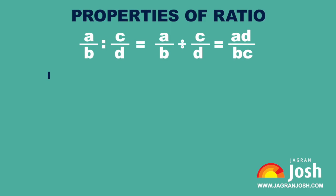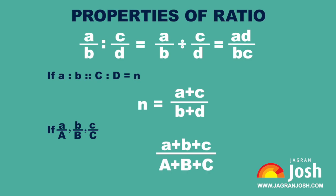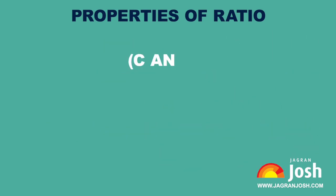If A is to B and C is to D equals N, where N is a constant, then N is equal to A plus C upon B plus D. If A upon A, B upon B, and C upon C are unequal fractions, then their ratio lies between the lowest and highest fraction among A plus B plus C upon A plus B plus C.